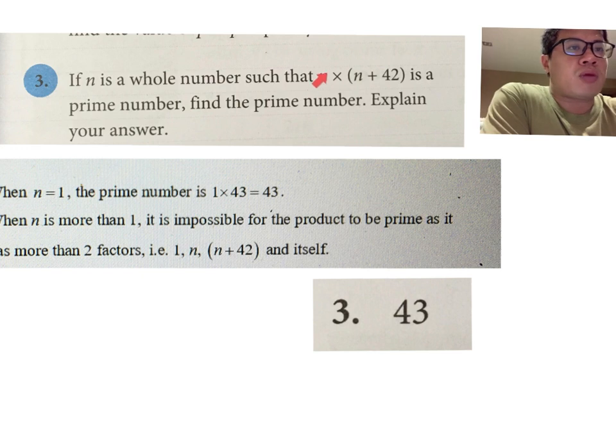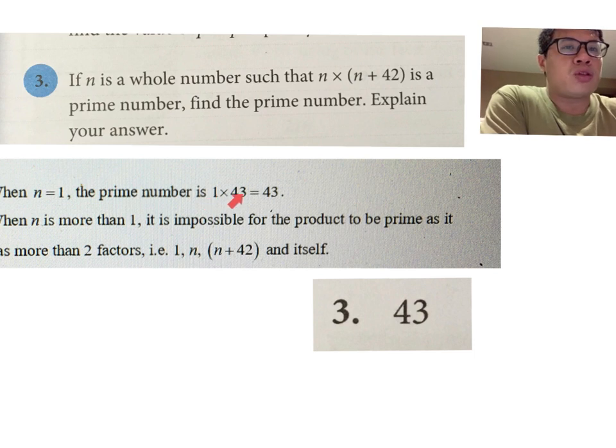Alright, so that means we're talking about n being one, and the number is 43. You can check that if you consider the numbers 1 and 43: if n is 1, and the number is 43,